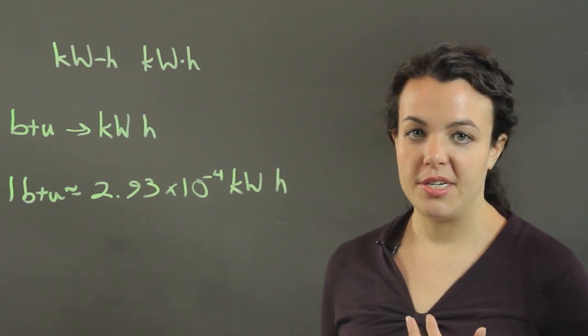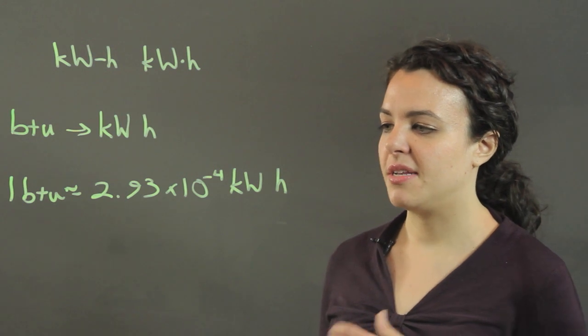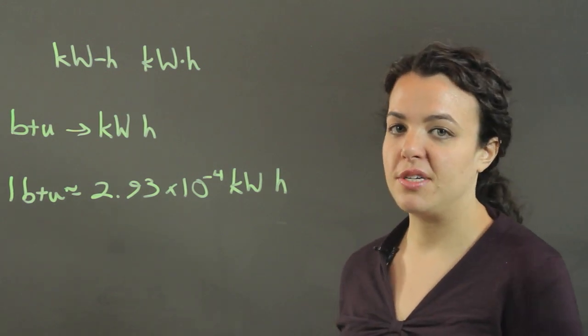So for every BTU you have, if you multiply it by 2.93 times 10 to the minus 4, you'll get the kilowatt hour equivalent of your BTU.